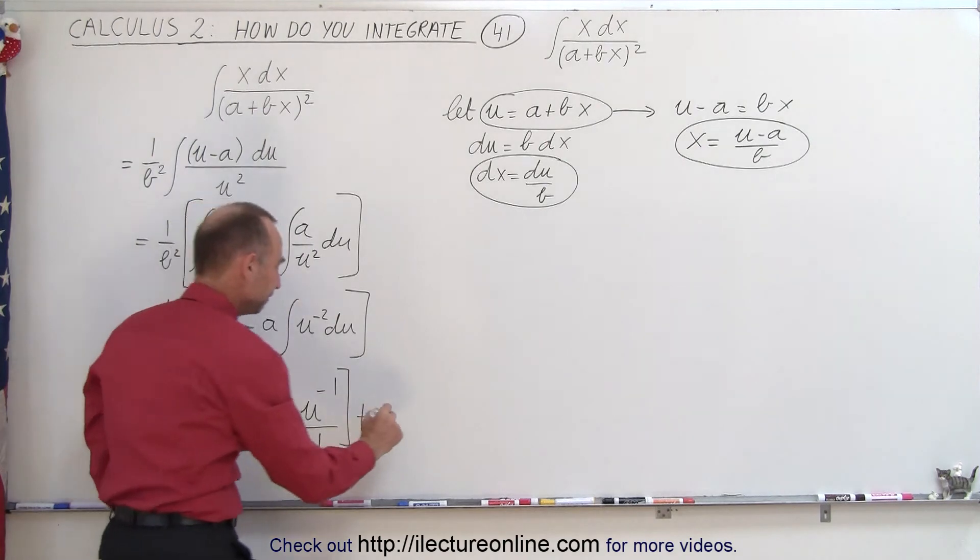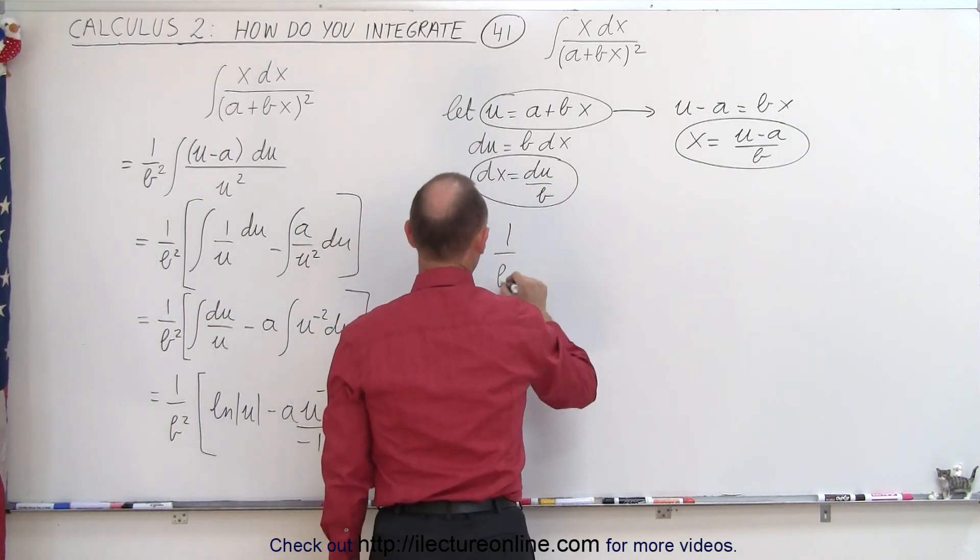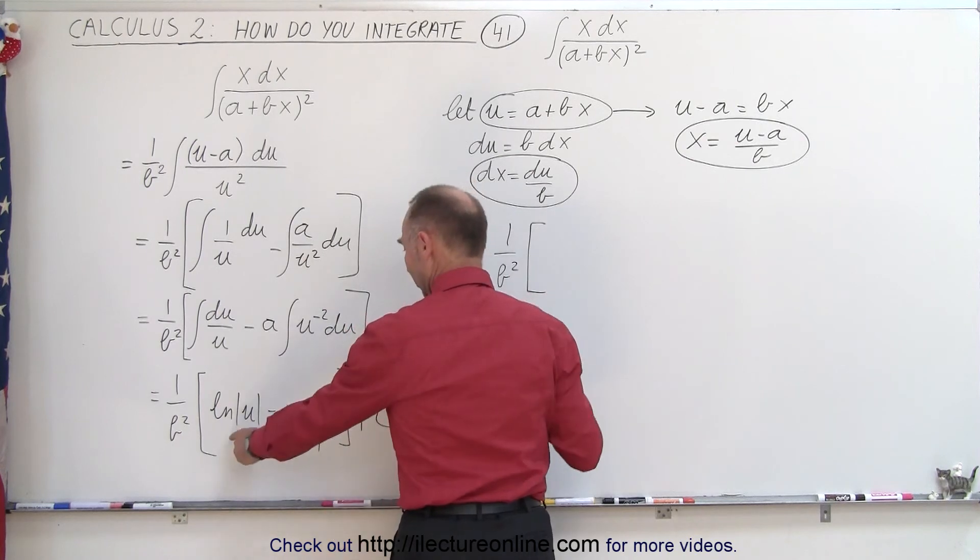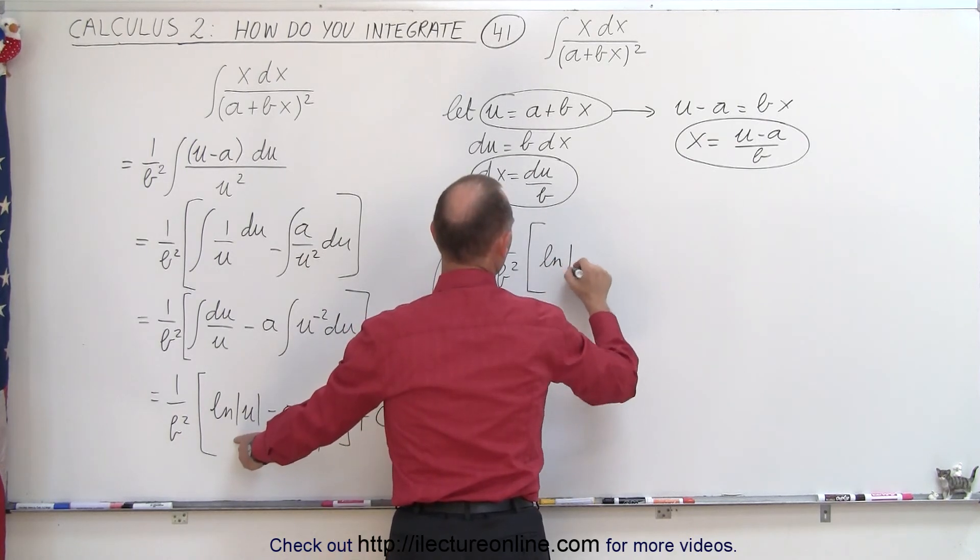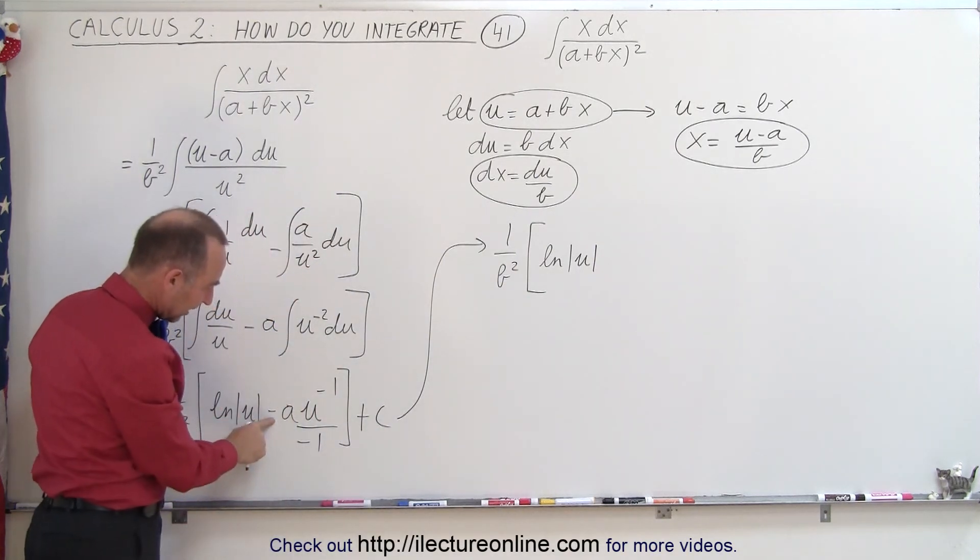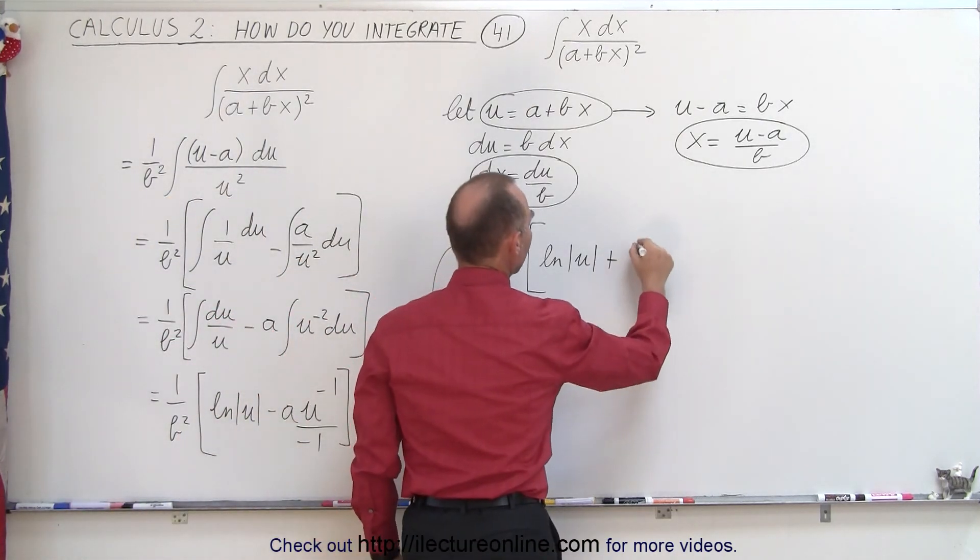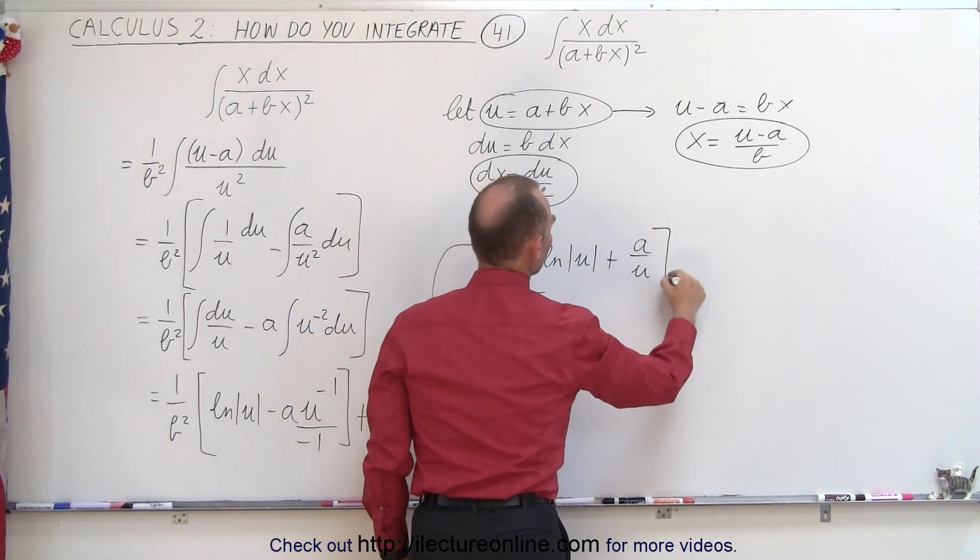So let's simplify that a little bit. Coming up here we can say that this is equal to 1 over b squared times the natural log of u and then when we come over here notice that this negative will cancel out that negative, that means a plus a times u to the minus 1 so that would be plus a over u plus a constant of integration.